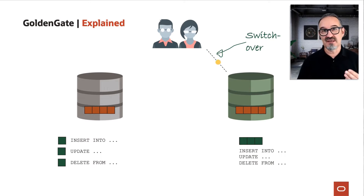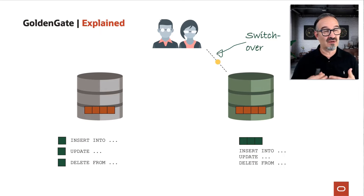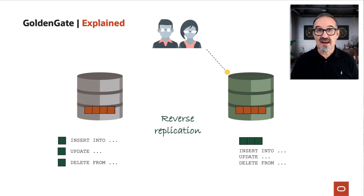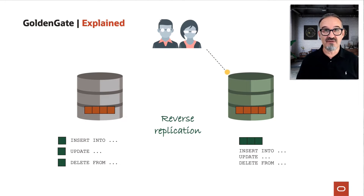This is why we say it's true zero downtime — you just switch over. The only downtime you may see will be in the application. And if everything is set up correctly, like transparent application failover or application continuity especially, then you won't see even a downtime on the application layer. And even cooler, I personally think, is the reverse replication — you send everything done in the new environment back to the old environment, giving you a true fallback, even to a lower version.